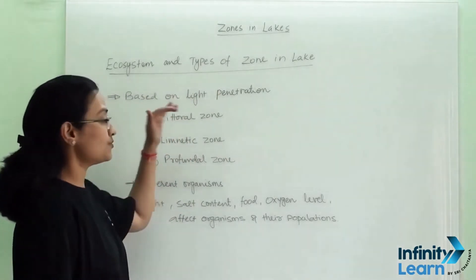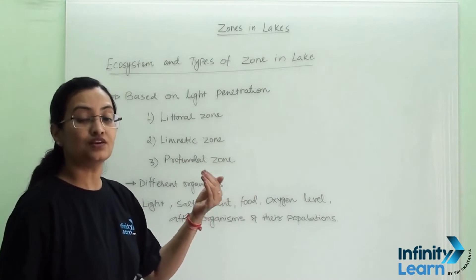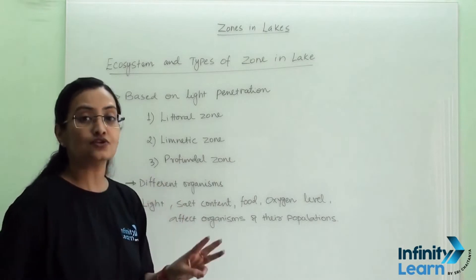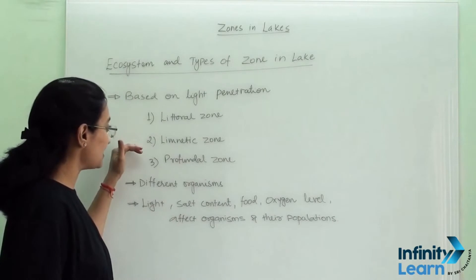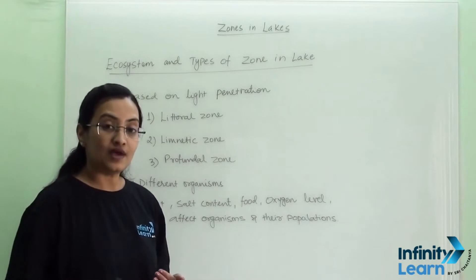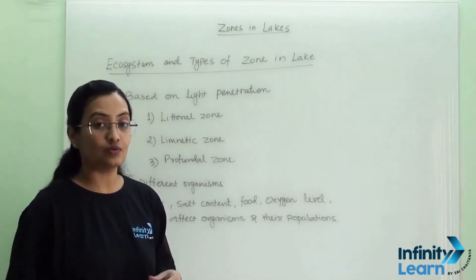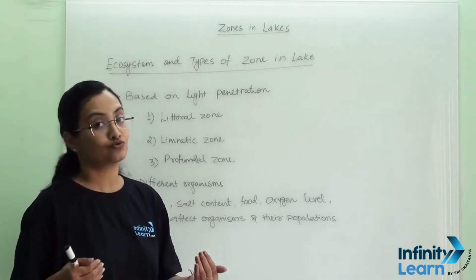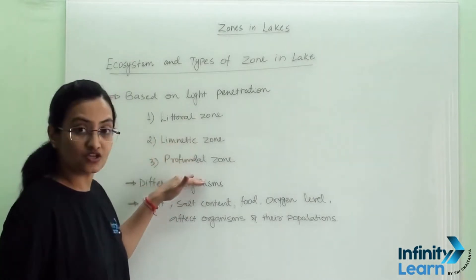Based on light penetration — that means how much amount of light will reach in a particular zone — we have segregated three zones for the lake. First is the littoral zone, second is the limnetic zone, and third is the profundal zone. As the zone varies, the amount of light varies, and accordingly the animals staying there also vary, so we can see different types of organisms in each zone.